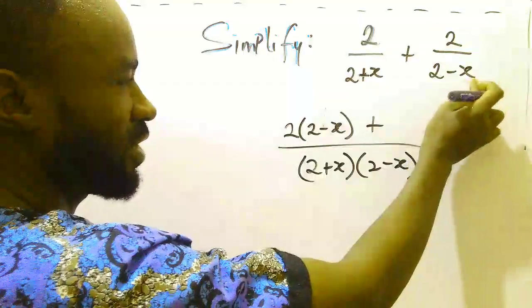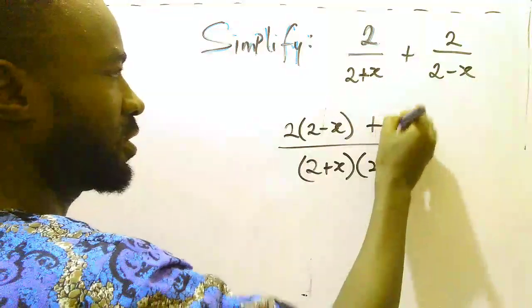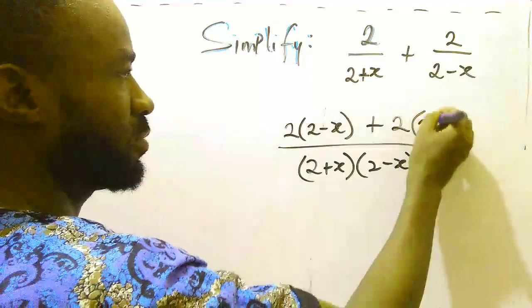So let's go again. Denominator 2 minus x cancels this. We are left with this. Use this to multiply the numerator. That gives us 2 bracket 2 plus x.